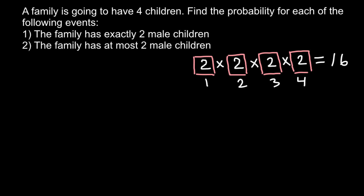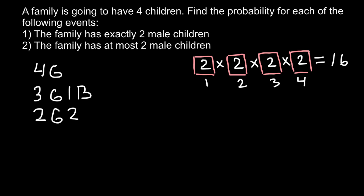What can these 16 combinations be? The first combination is all four children are girls. The second variant is three girls and one boy. The third variant is two girls and two boys. The fourth variant is three boys and one girl. And the last variant is all four children are boys.